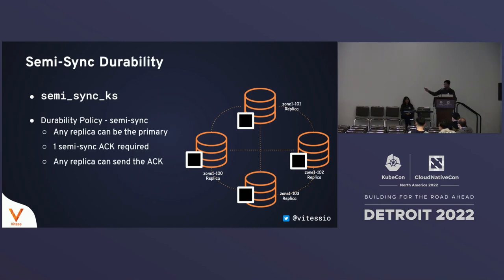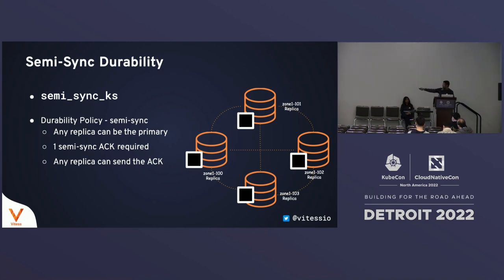Let's take a look at a demo. The demo will be in two parts. The first part uses a SemiSync durability policy with a SemiSync keyspace. The way it works: any replica can be the primary tablet, the primary only requires one SemiSync ACK to accept transactions, and any other replica can send those ACKs. In our example we'll have four replicas — zone 100, 101, 102, and 103.